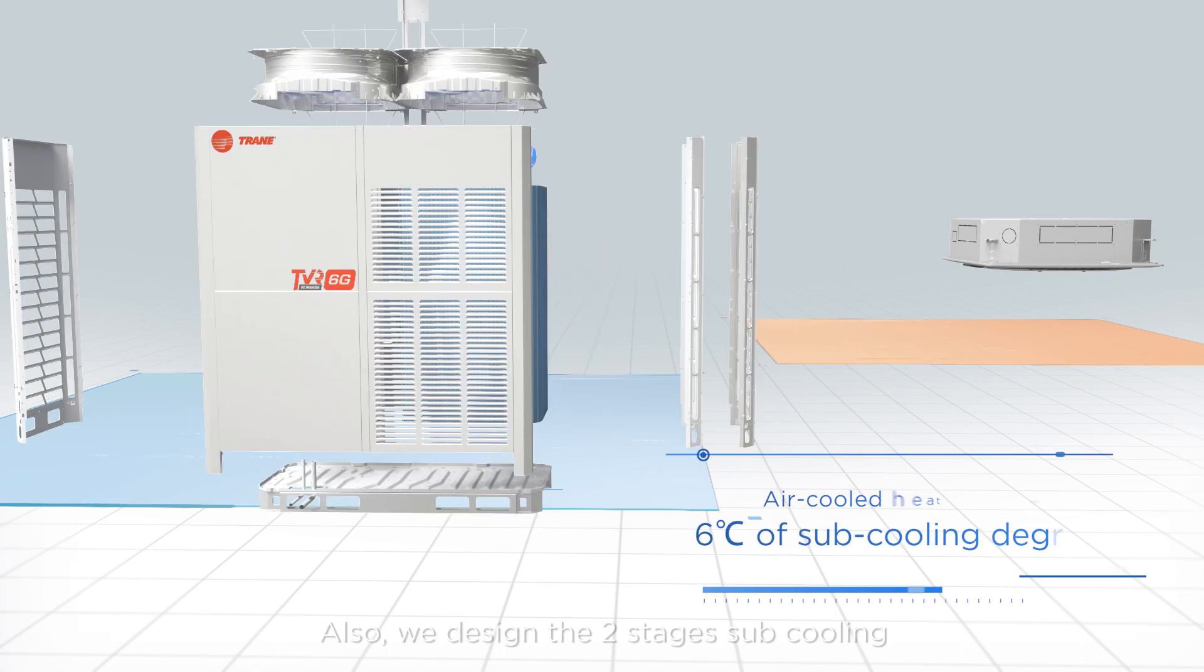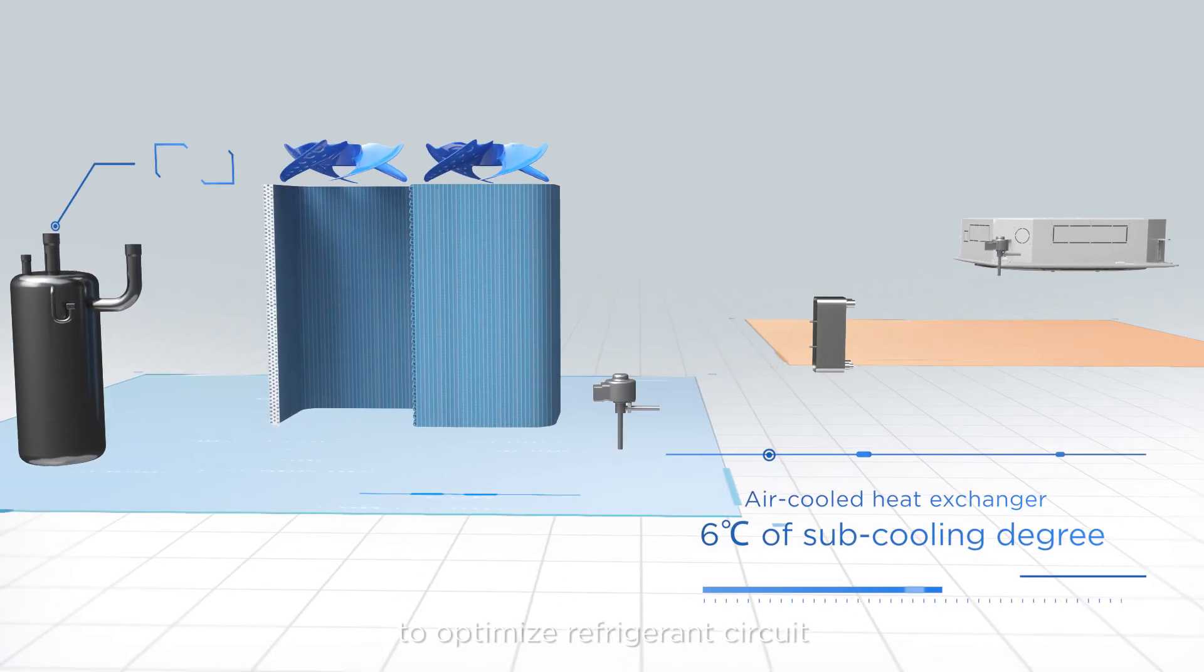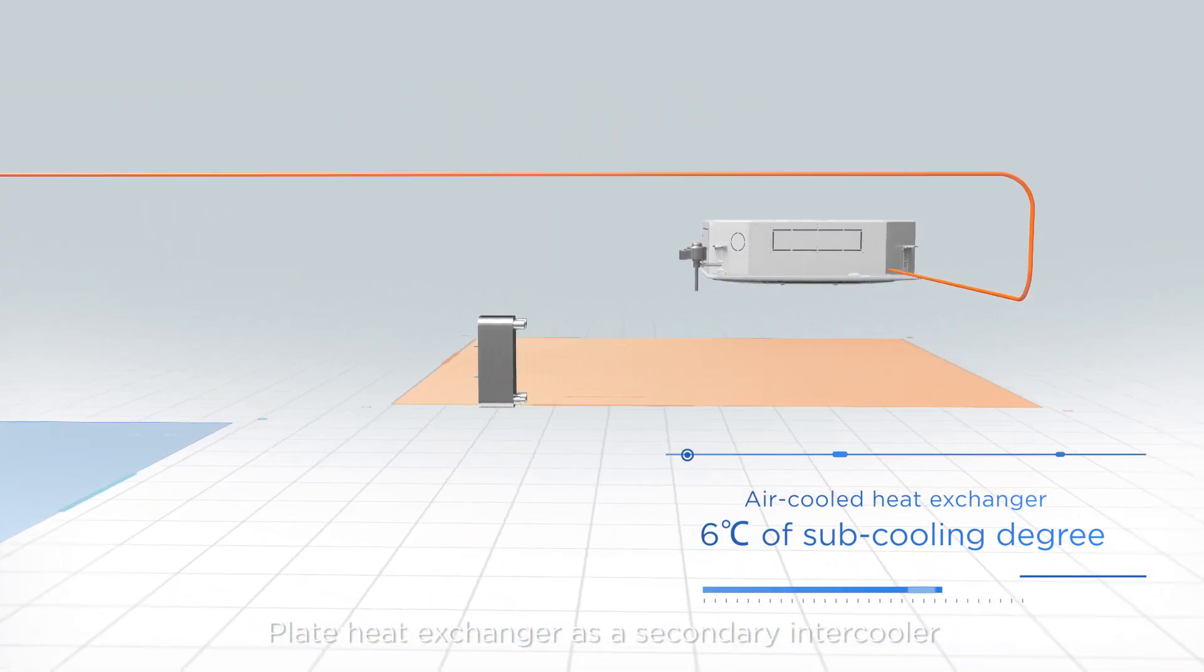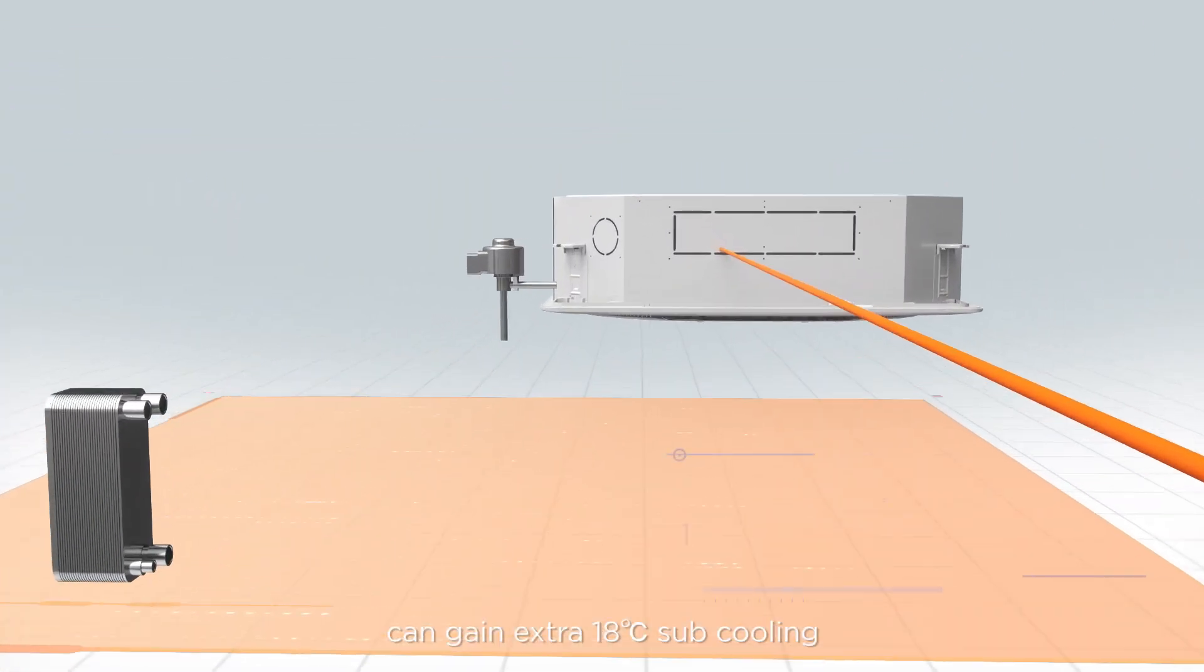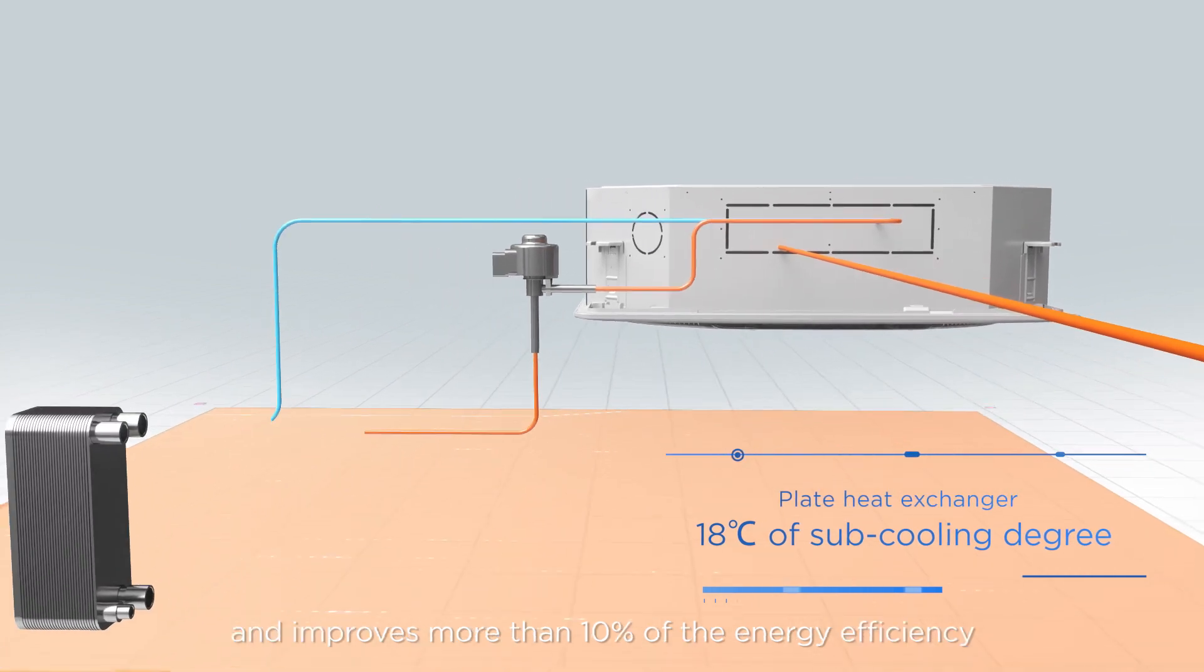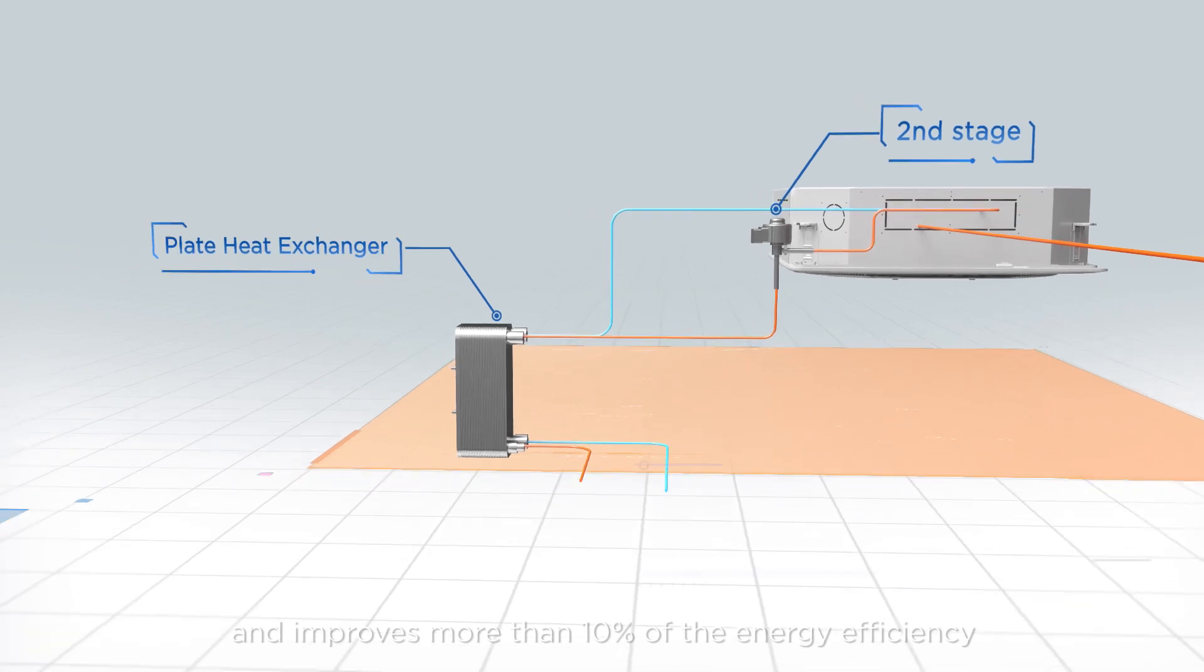Also, we designed the two stages sub-cooling to optimize refrigerant circuit. Plate heat exchanger, as a secondary intercooler, can gain extra 18 degrees Celsius sub-cooling and improves more than 10% of the energy efficiency.